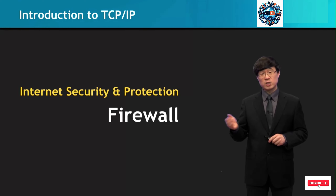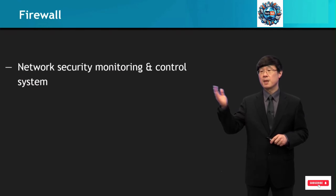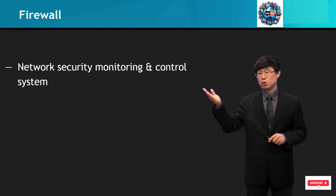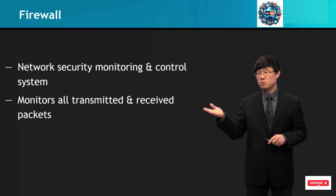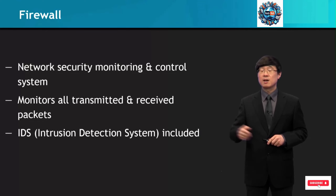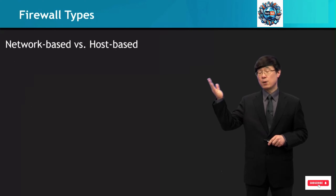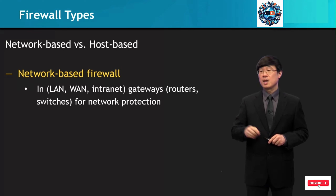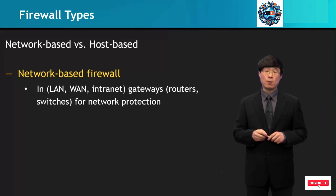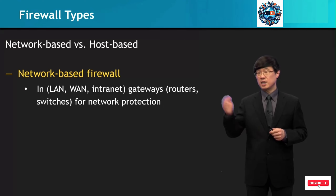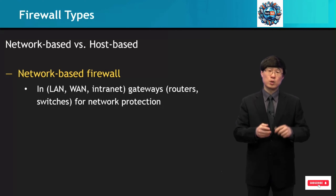This topic is about firewalls, which is a critical part in internet security and protection. A firewall is a network security monitoring and control system. It monitors all transmitted and received packets, and IDS systems are included. There's network-based and host-based. The network-based firewall is in the gateway and does network protection — typically in your local area network, wide area network, and also in gateways, routers, and switches.